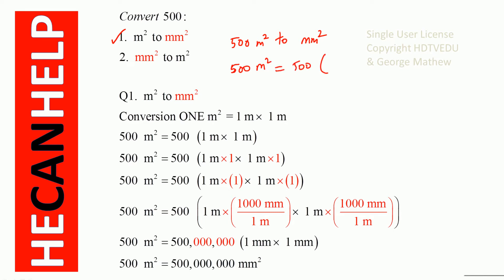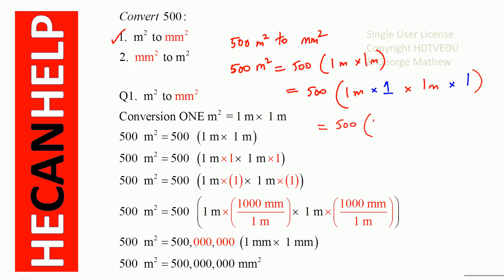500 times 1 meter times 1 meter. We multiply by 1, and then times 1 meter, and again we multiply by 1. Now, 1 meter is equal to 1000 millimeters, so we substitute both meters: 1 meter times 1 meter becomes 1000 millimeters times 1000 millimeters.